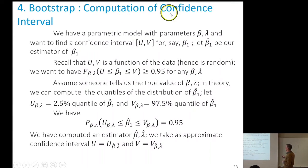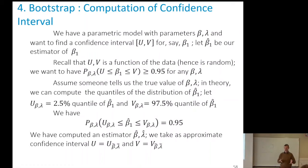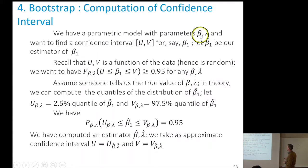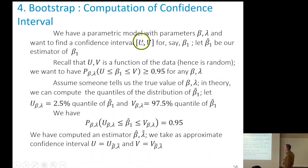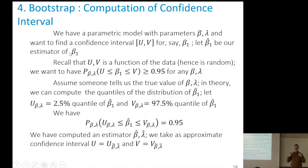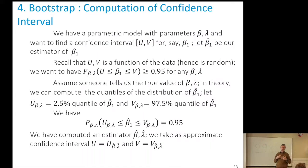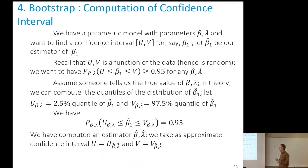Let's consider computing the confidence interval in a case where there is no textbook formula. We have obtained a parametric model with parameters beta and lambda — that's what we did for Joe's shop assuming Laplace noise. Lambda is the intensity of the Laplace noise, beta is the ABCD parameters. We know how to estimate them by some optimization problem, but I want a confidence interval for one of the parameters, say the first coordinate beta 1.